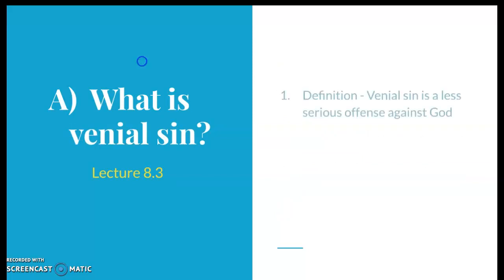What exactly is venial sin? Venial sin is a less serious offense against God. If you recall from the previous lecture, mortal sin was a serious or grave offense against God. So a venial sin is a less serious offense. When we think about sin, the way to conceptualize it is to think of sin as a spectrum. On one end of the spectrum we have mortal sin, which are the serious sins, and on the other end we have venial sins, which are the less serious sins.